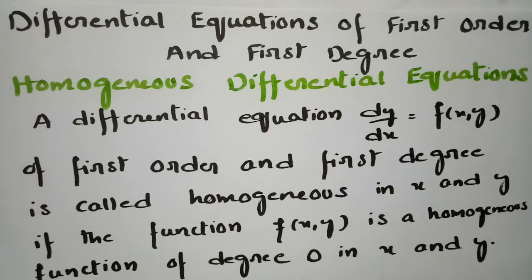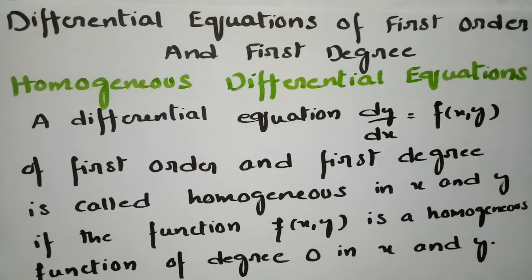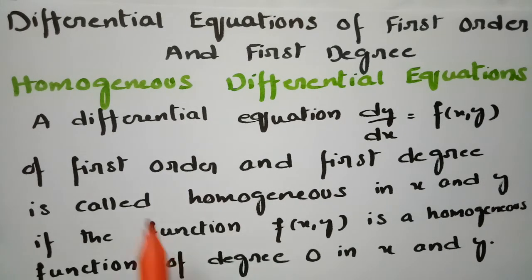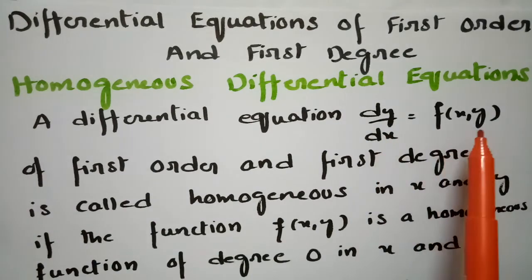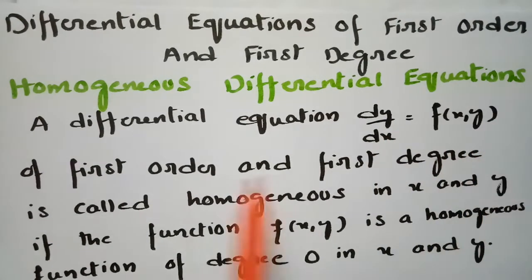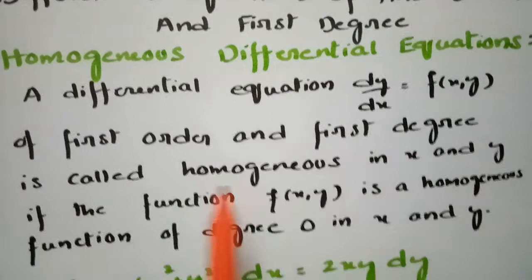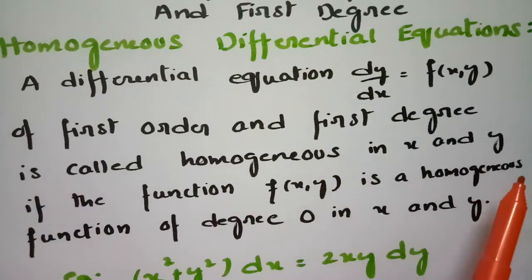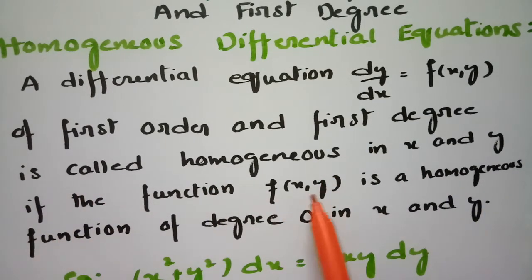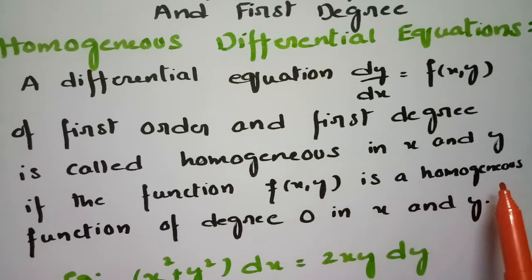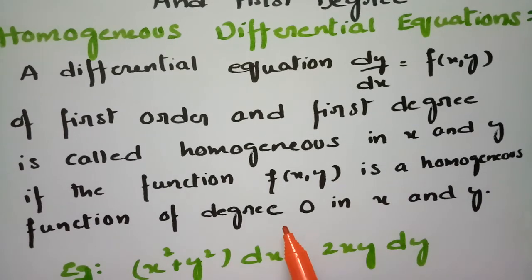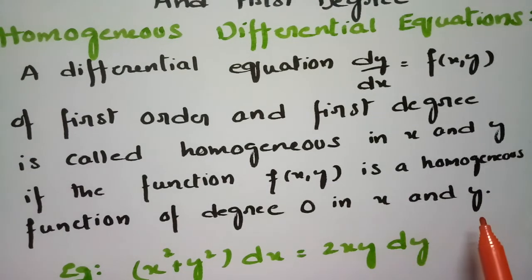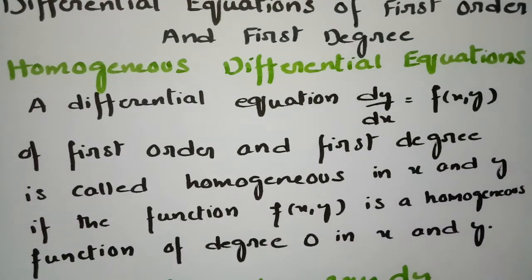Today's topic is homogeneous differential equations, from differential equations of first order and first degree. A differential equation dy/dx = f(x, y) is called homogeneous in x and y if f(x, y) is a homogeneous function of degree 0 in x and y. Homogeneous means uniformity, or maintaining the same degree.